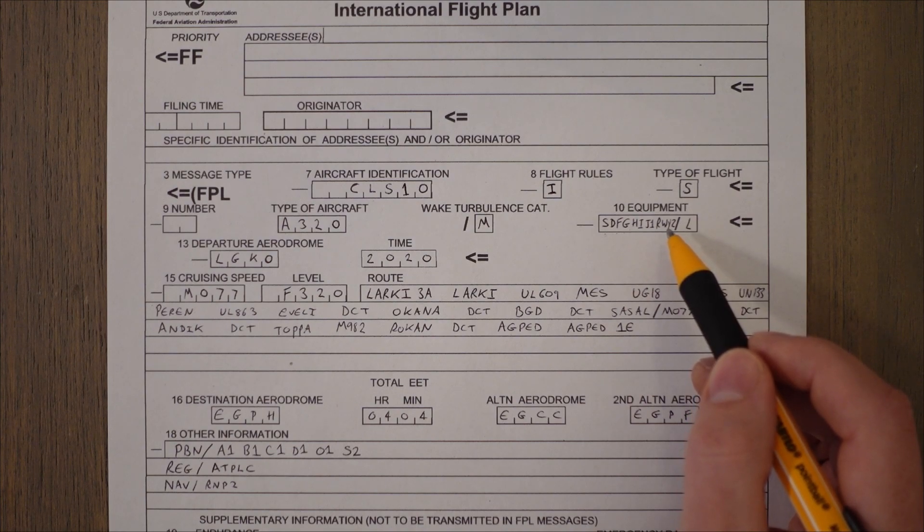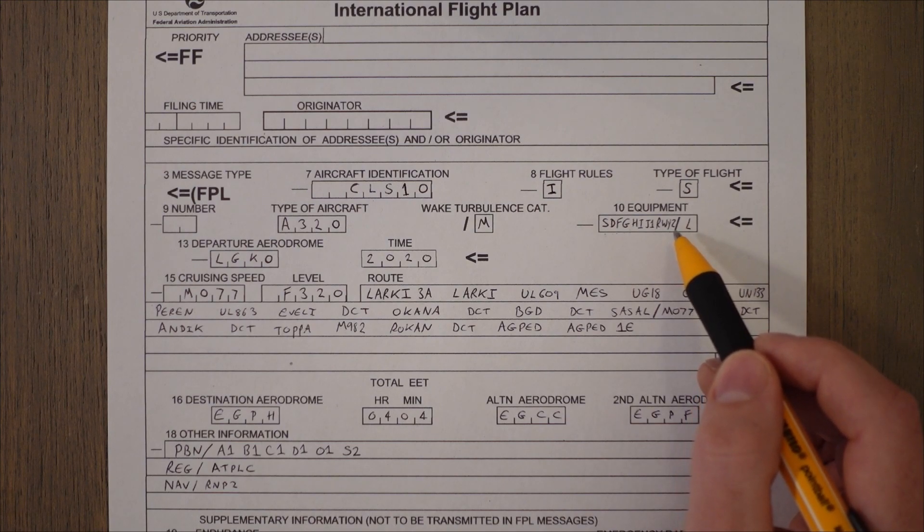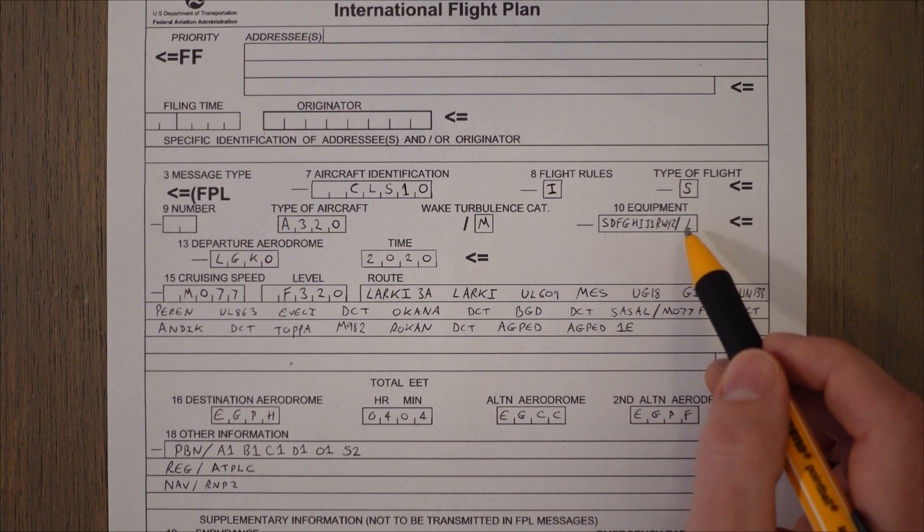W stands for RVSM, Reduced Vertical Separation Minima, which means we can reduce the vertical separation above certain flight levels to only a thousand feet between aircraft either above or below us. Y stands for VHF radio with 8.33 kilohertz spacing between them. Basically more up-to-date more accurate radios. We can use more frequencies. And Z is for any other equipment that will be detailed in section 18. This is usually the type of PBN operations which the aircraft is capable, that symbol R.